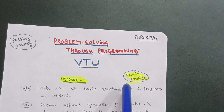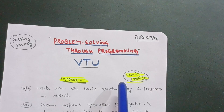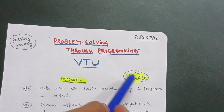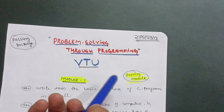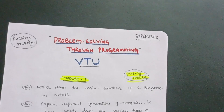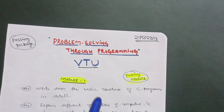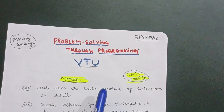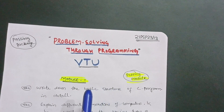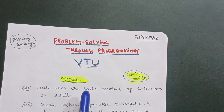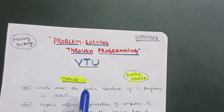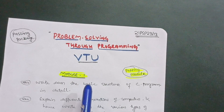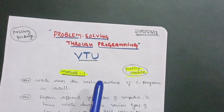There are three passing modules by which you can pass this particular subject, but only three is not enough to fully clear it — some programs are also there. So you have to take some important questions from the rest of the two modules also. Let me first discuss these three passing modules by which you can easily clear the backlog in this subject.